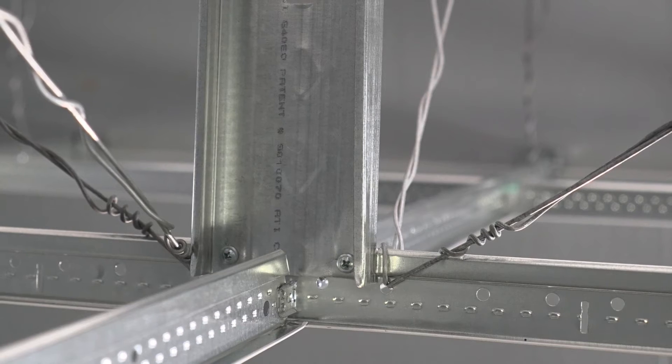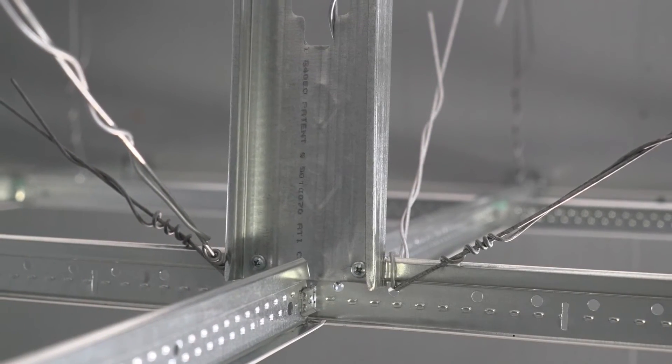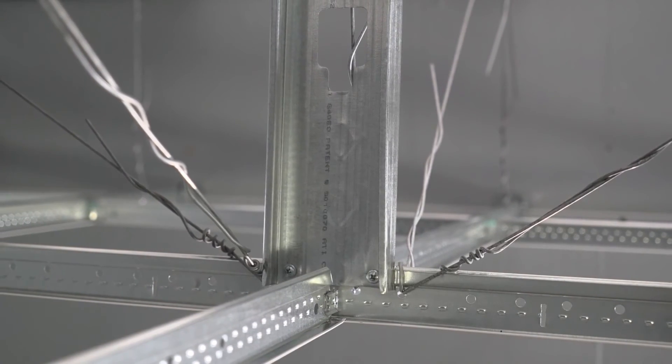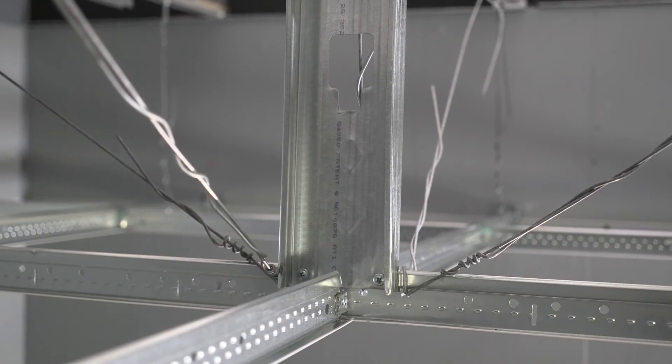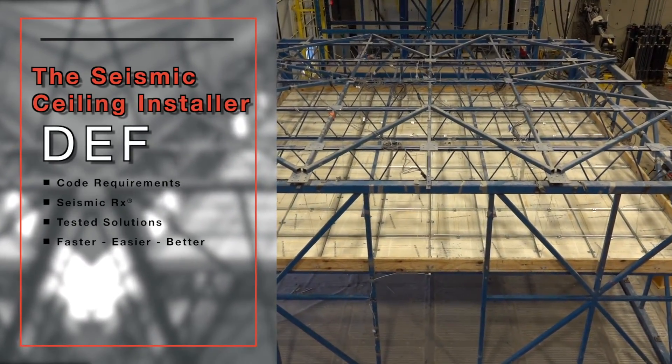I want to emphasize again, if you are installing Seismic RX separation joints which we reviewed earlier, only install those separation joints after you have installed all your seismic compression posts every 144 square feet. Thanks for watching the Seismic DEF ceiling installer video.